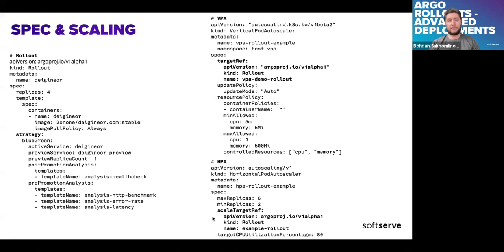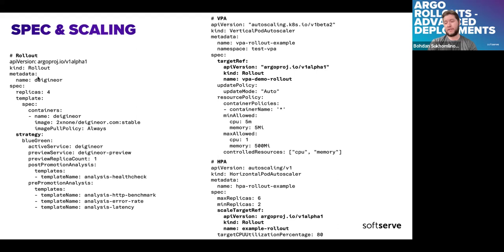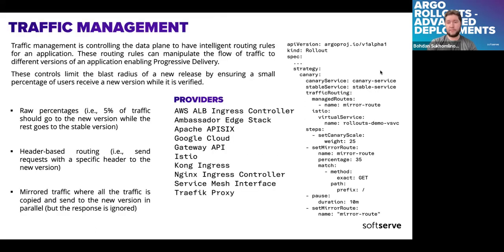Worth mentioning: ArgoRollouts will scale the load that has been promoted, not the one in the blue state. Also, you have the ability to set up a rollout that targets a reference to your existing deployment, setting the deployment's replica set to zero, and the rollout will control it while still checking the deployment manifest.